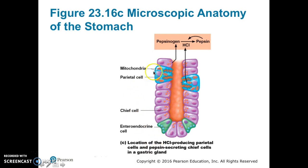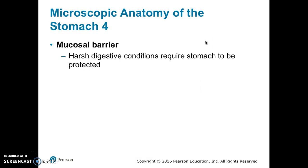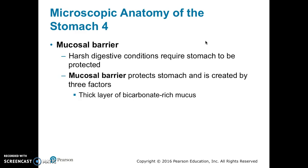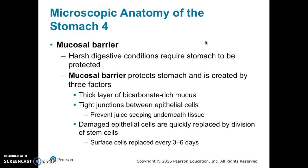This figure shows the close proximity of the hydrochloric acid-secreting parietal cells and the pepsinogen-secreting chief cells. The hydrochloric acid activates pepsinogen into pepsin. The harsh digestive conditions require the stomach to be protected by a mucosal barrier created by three factors: a thick layer of bicarbonate-rich mucus, tight junctions between epithelial cells to prevent gastric juice from seeping into underlying tissue, and rapid replacement of damaged epithelial cells by stem cell division — surface cells are replaced every three to six days.